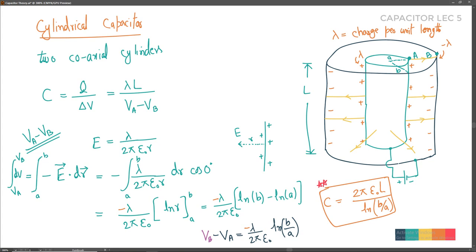An interesting point: the capacitance depends directly on the length L of the cylindrical design. If the length increases 10 times, the capacitance increases 10 times. And it inversely depends on the ratio b/a through the ln(b/a) term. So by adjusting the inner and outer radii, you can get very large capacitance values.